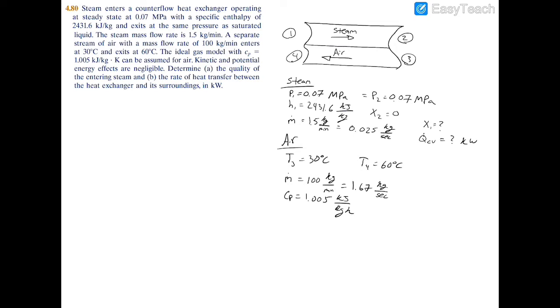So first we'll calculate the quality at the inlet for steam. So we have x1 is equal to h1 minus hf divided by hg minus hf. So this is just the formula you use for basically any quality. You have to use one of these intensive properties such as enthalpy or specific energy. So we're given enthalpy, so we're going to use enthalpy. So we can substitute that x1 is equal to h1 which is equal to 2431.6.